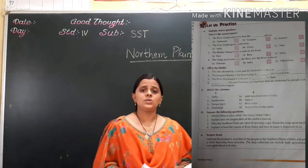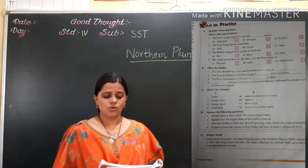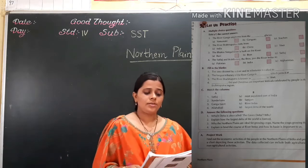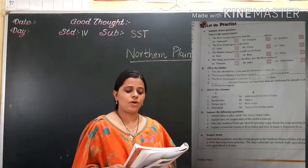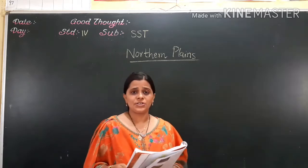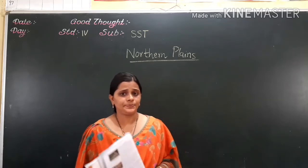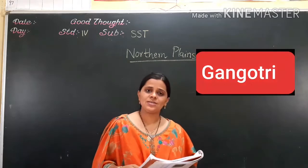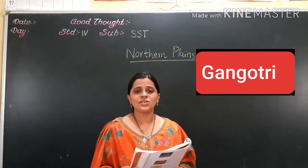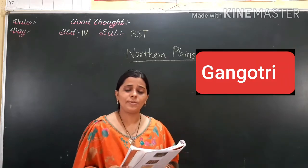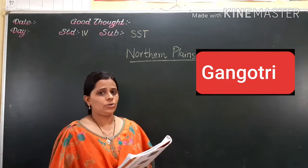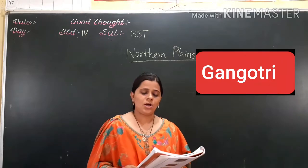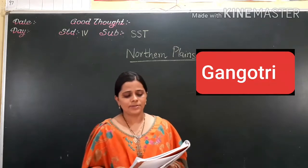First question is a multiple choice question. The question is: the river Ganga originates from the dash glacier. Can you tell me the answer? That is Gangotri. The options given are Yamunotri, Gangotri, and Siachen. The correct answer is Gangotri, so we put a tick mark in front of that answer.